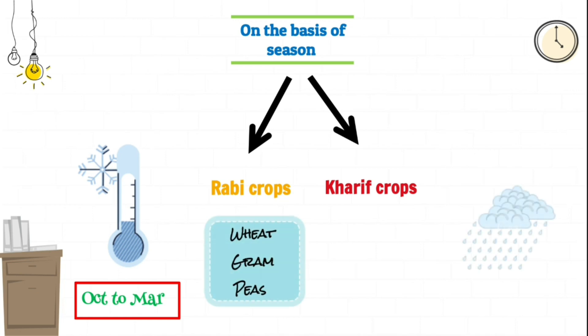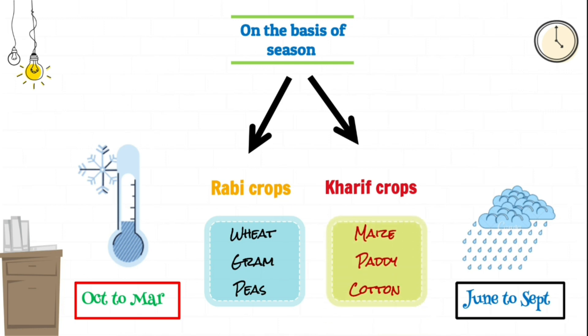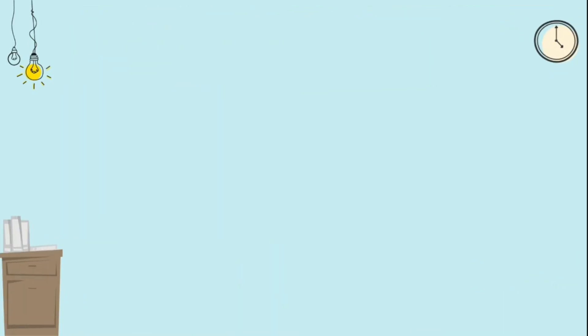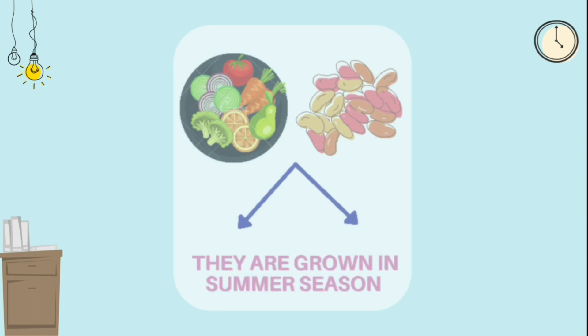Kharif crops are grown in rainy season. Generally in India, the rainy season is from June to September. Examples of kharif crops are maize, paddy and cotton. Besides this, vegetables and pulses are grown in summer season.